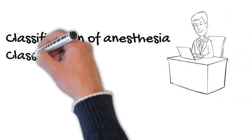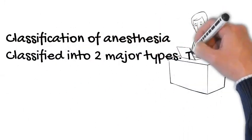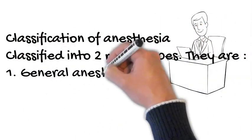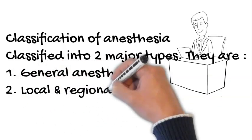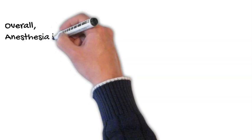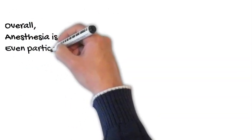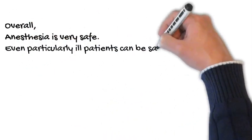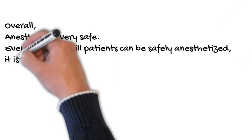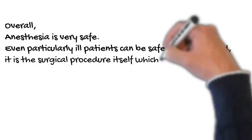Anesthesia is classified into two major types: general anesthesia, and local and regional anesthesia, which I will be discussing in my upcoming videos. Overall, anesthesia is very safe. Even particularly ill patients can be safely anesthetized. It is the surgical procedure itself which offers the most risk.